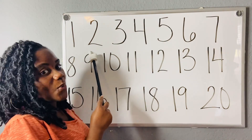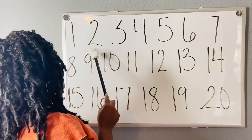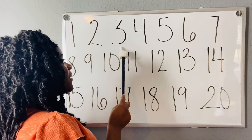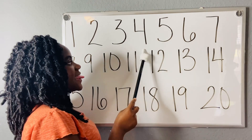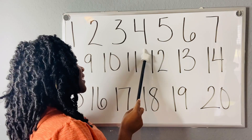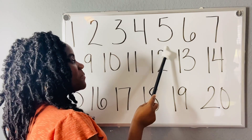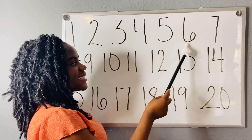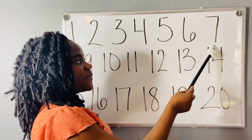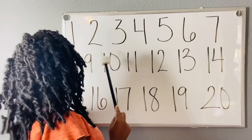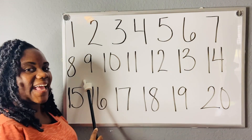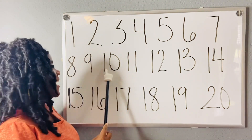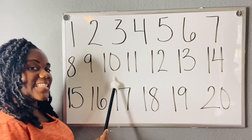This is the number 1. 1. This is the number 2. 2. This is the number 3. 3. This is the number 4. 4. This is the number 5. 5. This is the number 6. 6. This is the number 7. 7. This is the number 8. 8. This is the number 9. 9. This is the number 10. 10.